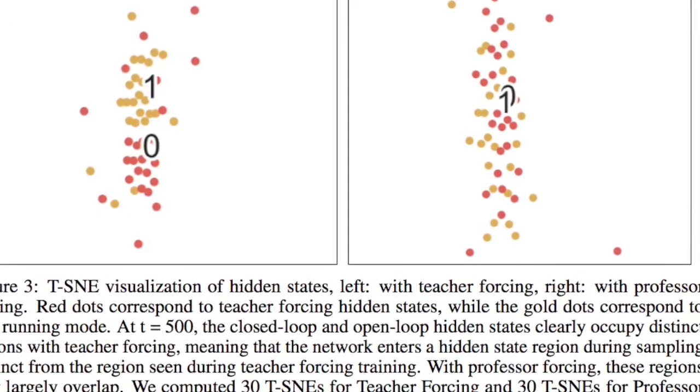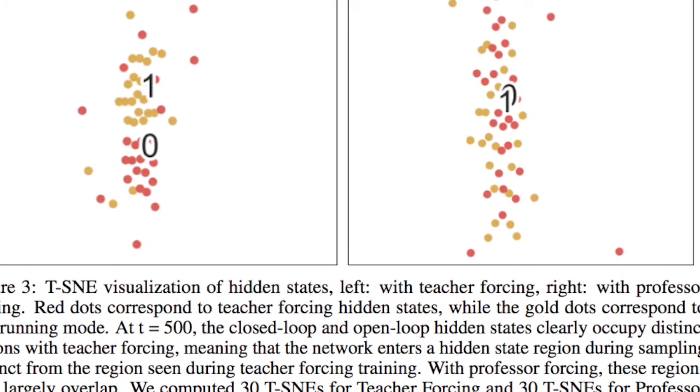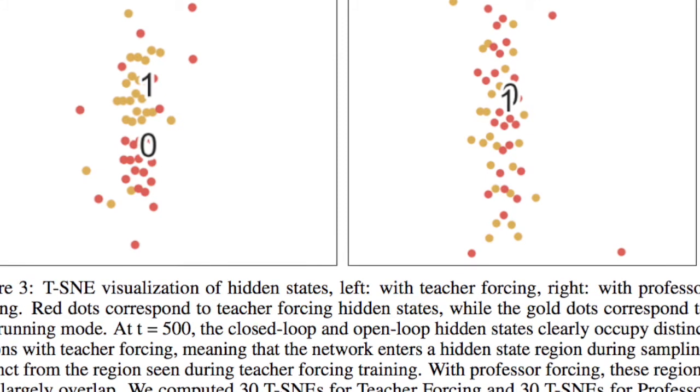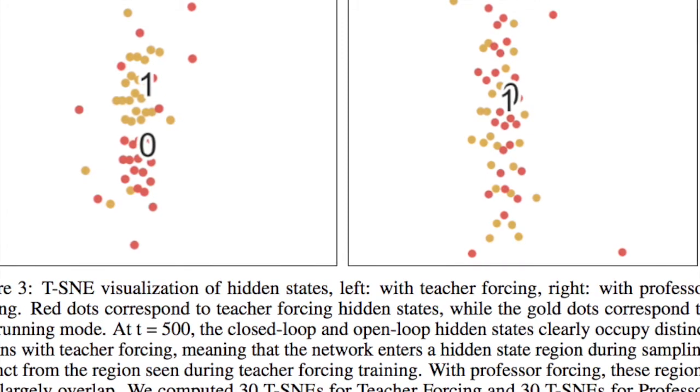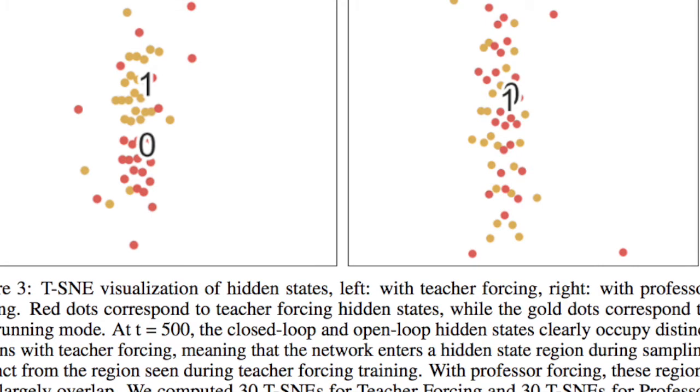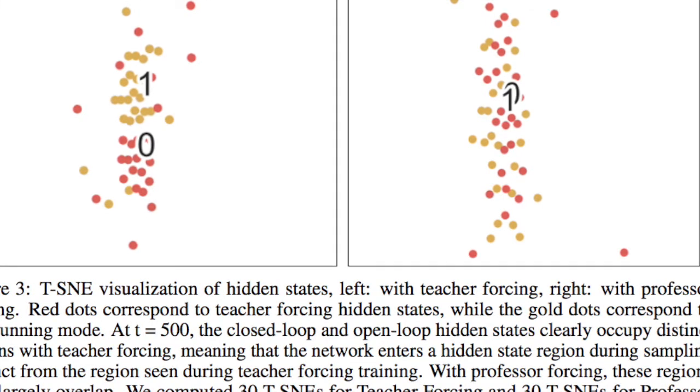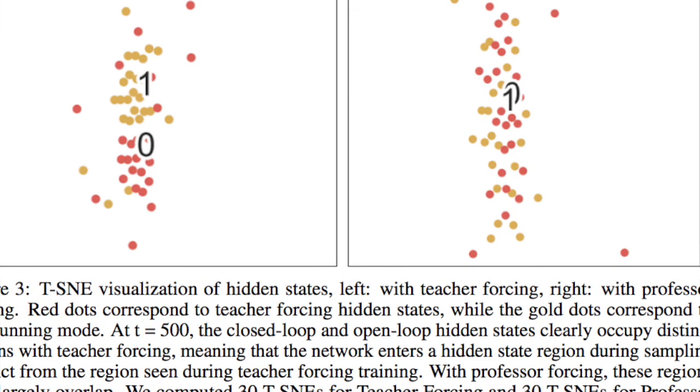Two, it can be difficult to know if the discriminator in Professor Forcing is having the desired impact of improving long-term sequence generation. In practice, we found that using Professor Forcing often improved the likelihood of the one-step-ahead model, though this was a surprising result.